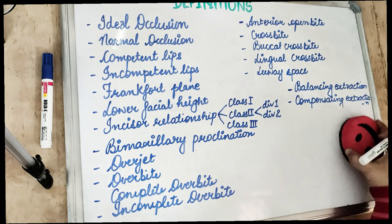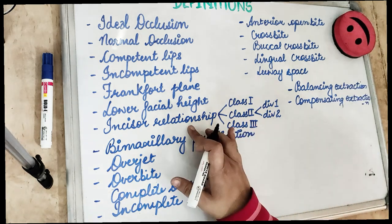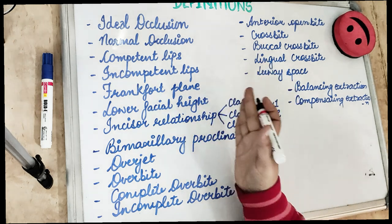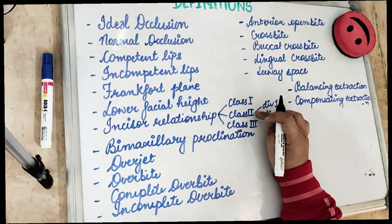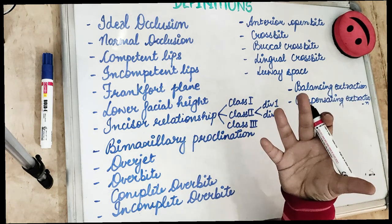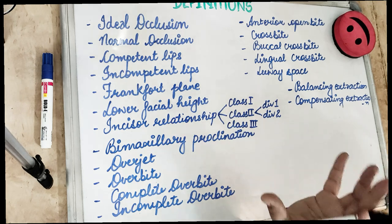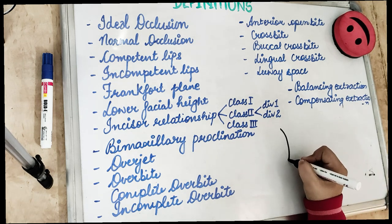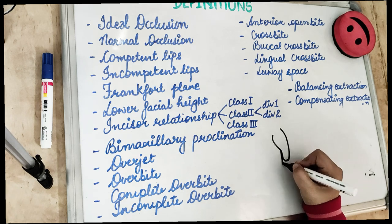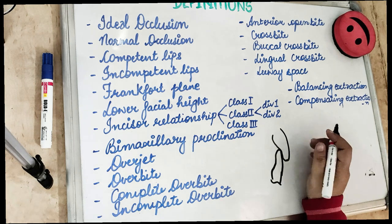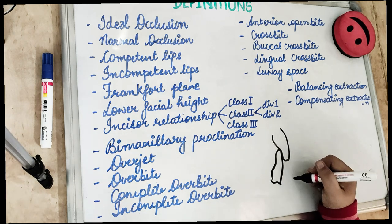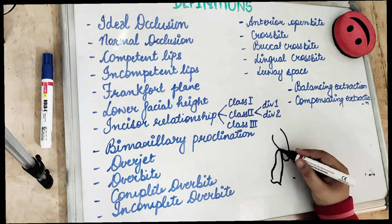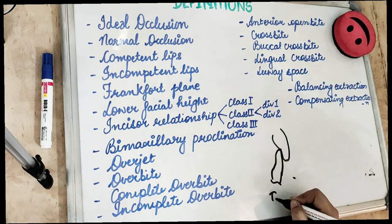Now, the British Standard Classification of Incisal Relationship, given in 1983. Class 1 incisal relationship is when the lower incisal edges coincide with or lie immediately below the cingulum of the upper incisors. Class 2 is when the upper teeth have come out significantly — the upper teeth are visible and have a rabbit-like appearance.